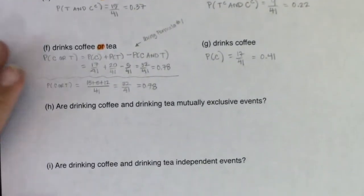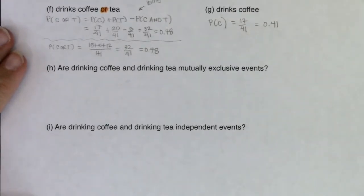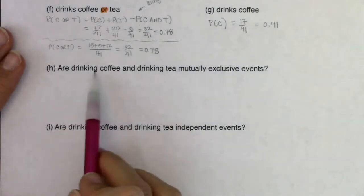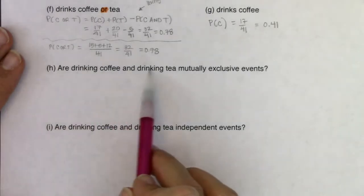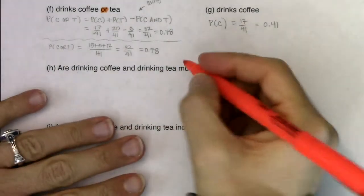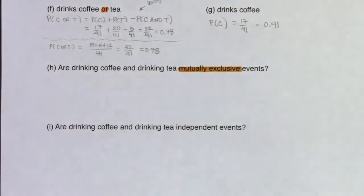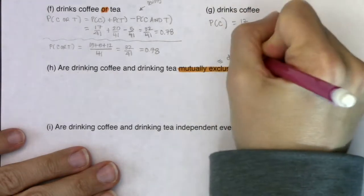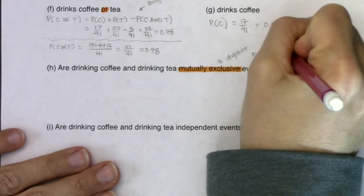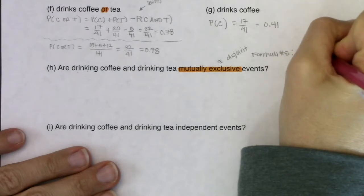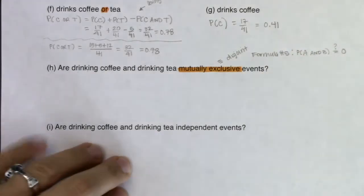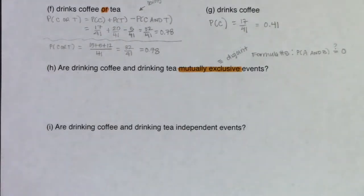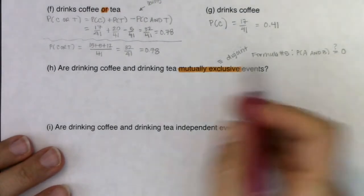Now let's get into formulas three, four, and five and think about how to apply them. Part H asks: are drinking coffee and drinking tea mutually exclusive? Mutually exclusive is another word for disjoint. We apply formula five: is P(A and B) equal to zero? If it is zero, the events are mutually exclusive; if not, they are not mutually exclusive.